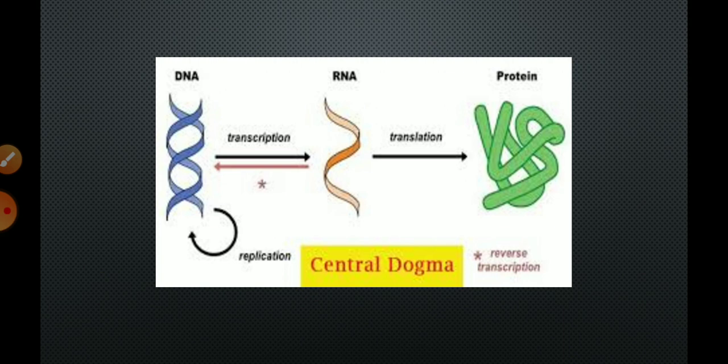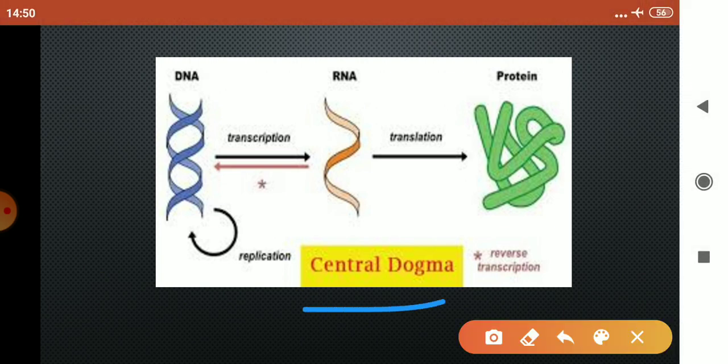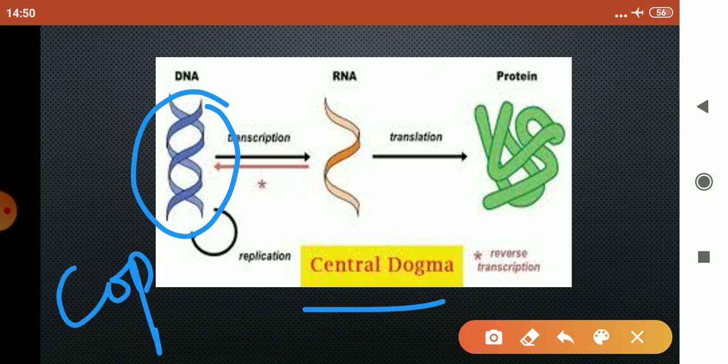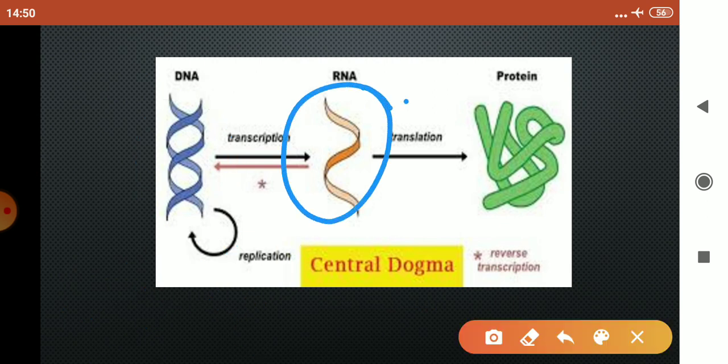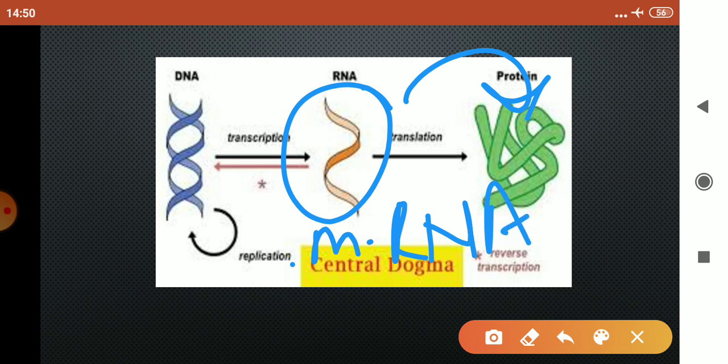Children if you remember the central dogma of molecular biology, I have told you that a DNA, jo DNA hota hai, uske andar ek capability hoti hai ki wo apni copy bana sakta hai. Yani ki DNA is the only biomolecule which can make its own copy and that process is called as replication. Now from DNA RNA is formed and from RNA proteins are formed. So children the formation of RNA, this is basically mRNA, the formation of RNA from DNA is called as transcription and the formation of protein from RNA is called as translation.